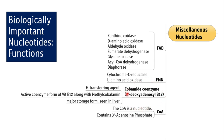The cobamide coenzyme, 5'-deoxyadenosyl vitamin B12, is basically a hydrogen-transferring agent. It is the active coenzyme form of vitamin B12 along with methylcobalamin — so there are two forms: methylcobalamin and 5'-deoxyadenosyl vitamin B12. It is the major storage form seen in the liver. Coenzyme A is a nucleotide because it contains 3'-adenosine phosphate.